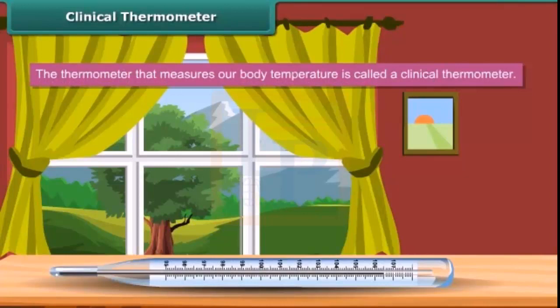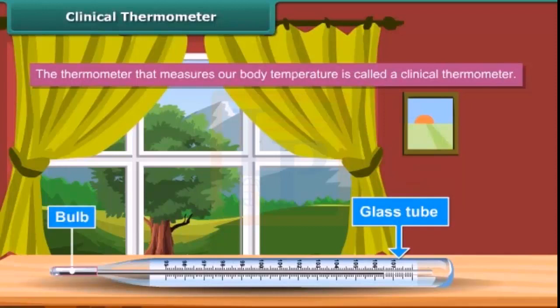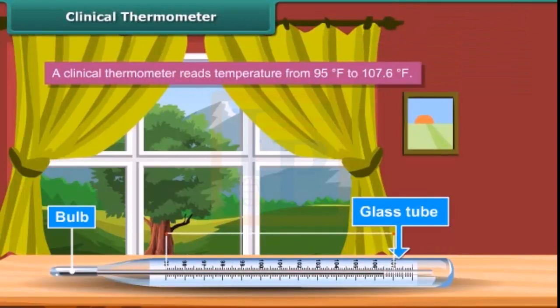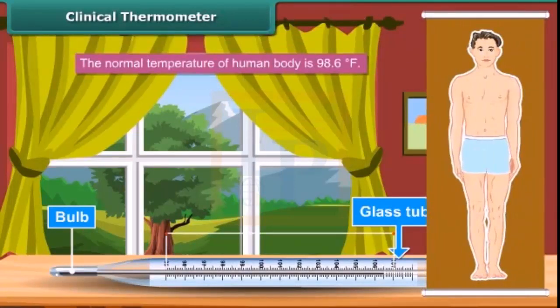A clinical thermometer consists of a long, narrow, uniform glass tube. It has a bulb at one end, filled with mercury. Outside the bulb, a small shining thread of mercury can be seen. A clinical thermometer reads temperature from 95 degree Fahrenheit to 107.6 degree Fahrenheit. The normal temperature of human body is 98.6 degree Fahrenheit. The clinical thermometer is also known as a doctor's thermometer.